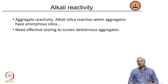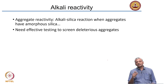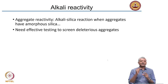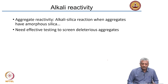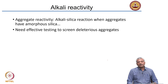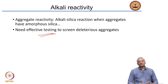Another problem with some aggregates is alkali-aggregate reaction. Some volcanic rocks, for instance like rhyolite and andesite, if broken into aggregate size and used in concrete, the cement has a lot of alkalis in it, and these alkalis may enter into a reaction with the silica in such aggregates, causing the formation of expansive gels. This leads to expansions and cracking in concrete. You need to do effective testing of the material to ensure it will not cause a problem in the concrete.